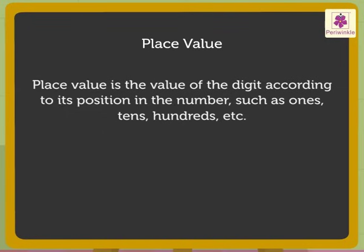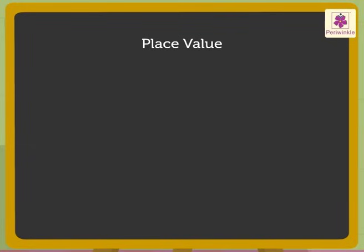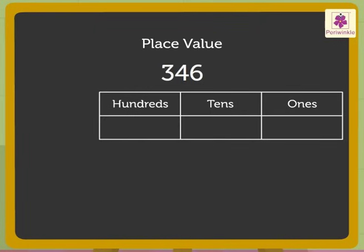Let us understand this with the help of a number. Let us take the number 346. We write the number 346 in the place value chart as number 3 in the hundreds column, number 4 in the tens column and number 6 in the ones column.